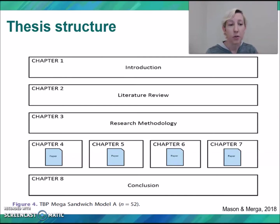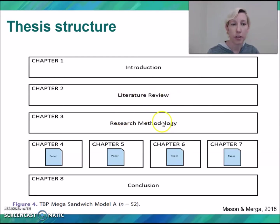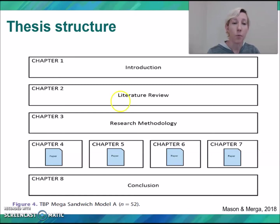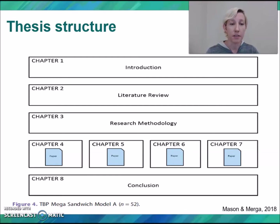Then we have what we call the Mega Sandwich model — again, we have three models A, B, and C, but we're seeing the same basic thing. We have an introduction and a conclusion chapter, but we also have some extra filling in the sandwich: a literature review chapter and a methodology chapter. These are probably going to be shorter than what you would traditionally see in a thesis, but they fill in some of the gaps that perhaps the papers don't cover.